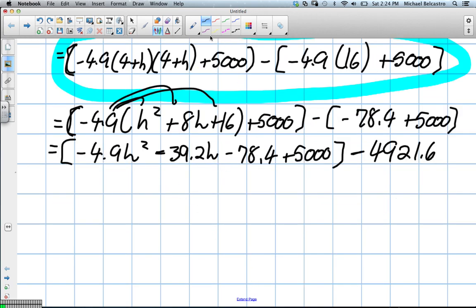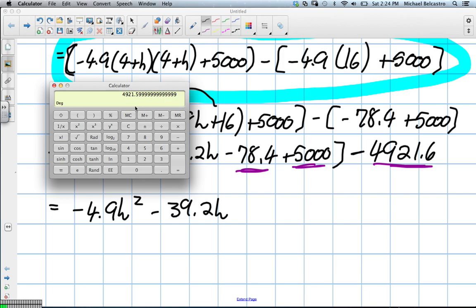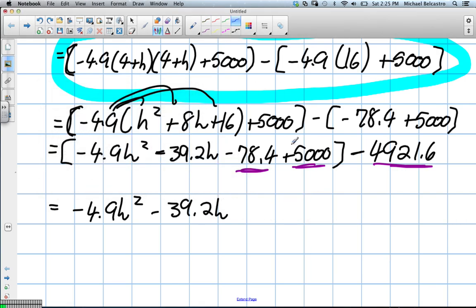Then from there, we're going to simplify any like terms we have. So we distribute this negative 4.9 into everything. That'll become negative 4.9h squared minus 39.2h, and we already did 4.9 times 16, so minus 78.4, and then plus that 5000. And all of that is going to be subtracted by this value here, negative 78.4 plus 5000. When we combine all of those numbers together, they're going to cancel each other out. So all three of those terms essentially cancel each other out. So we're just left with these front two terms here.